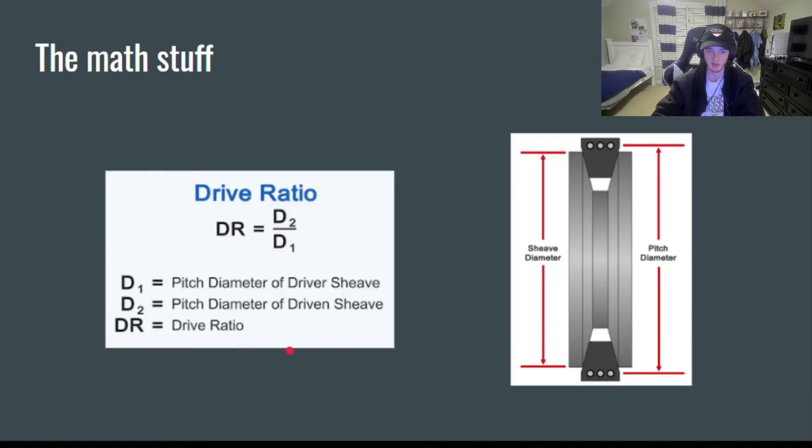But basically, in order to find the ratio and understand the speed and torque of each of your sheaves better, which we'll get into a little bit more detail later, you have to measure the pitch diameter of your driver sheave, which would be this one, and your driven sheave, which would be this one.